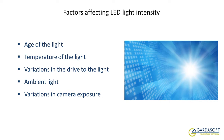The second factor is temperature of the light. GardaSoft has characterised a significant number of machine vision lights, and has found that as LEDs heat up from 25 degrees to 90 degrees C, the brightness of the LEDs drops by up to about 40%. This is a significant variation, which may not be seen during commissioning, but which can cause variability during normal running.